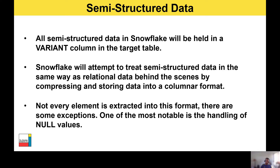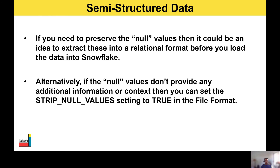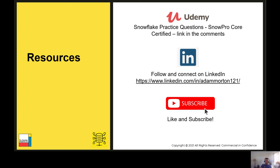Due to this, the data cannot be stored in the optimized way, and the performance cost is that if Snowflake can't find the extracted element in the columnar format, it has to scan the entire JSON structure to find the values. There are a couple of things you can do to avoid that. If you need to preserve the null value because it provides valuable information, you could extract those fields into relational format before loading into Snowflake. This creates additional upfront work, but the performance gains when querying the data repeatedly may be worth it. Alternatively, if the null values don't provide any additional business context, you can set the STRIP_NULL_VALUES option to true in the file format.